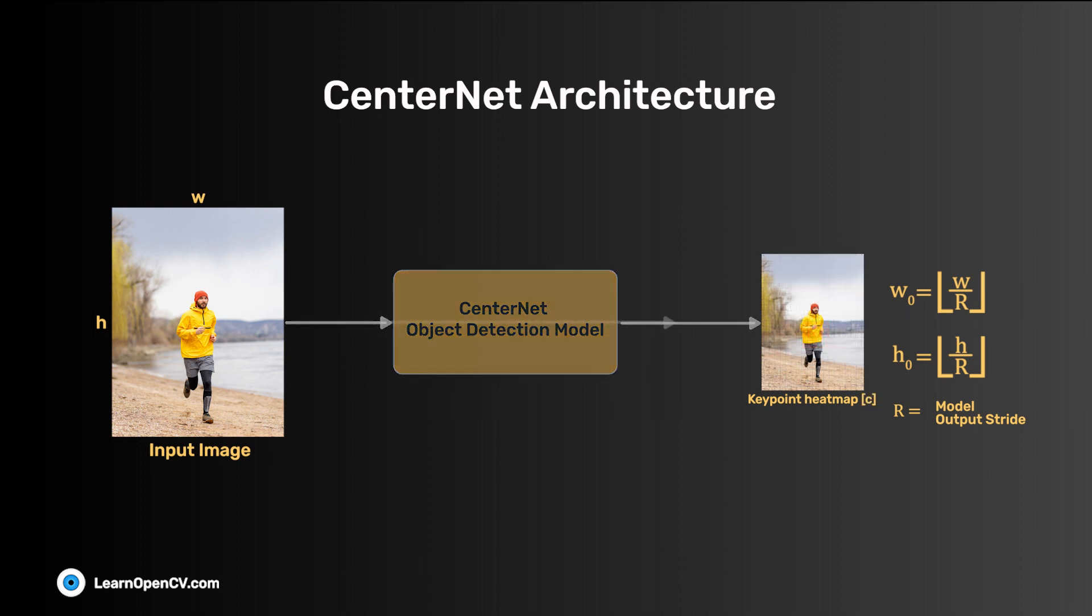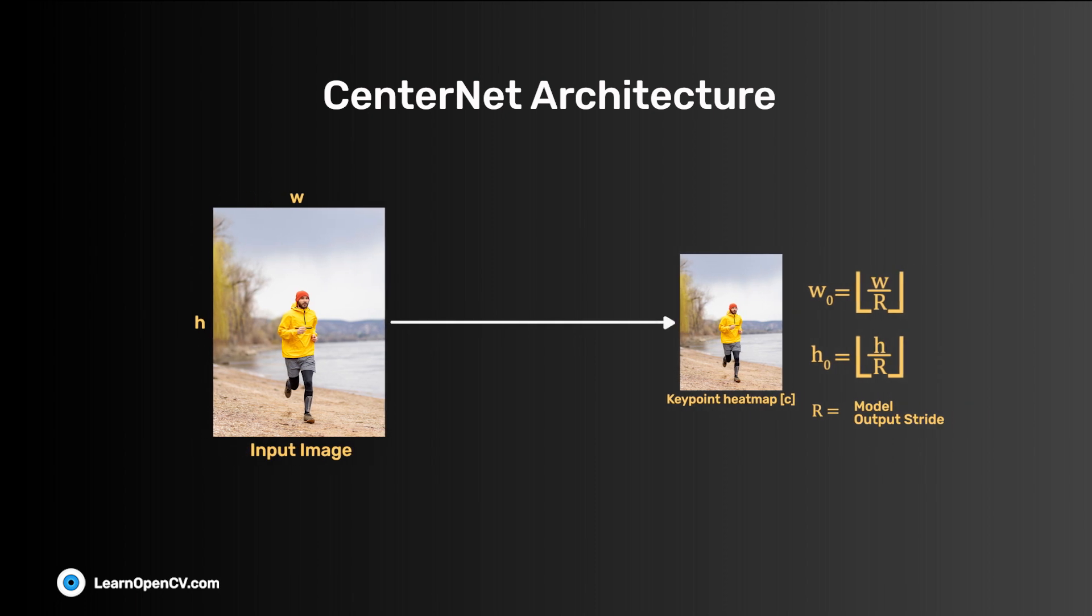During heatmap calculation, due to the output stride and the floor operation, multiple pixels from the input image map to the same pixel on the output heatmap. For example, point 200-200 and point 203-203 on the input image will both map to the point 50-50 on the heatmap for output stride 4.